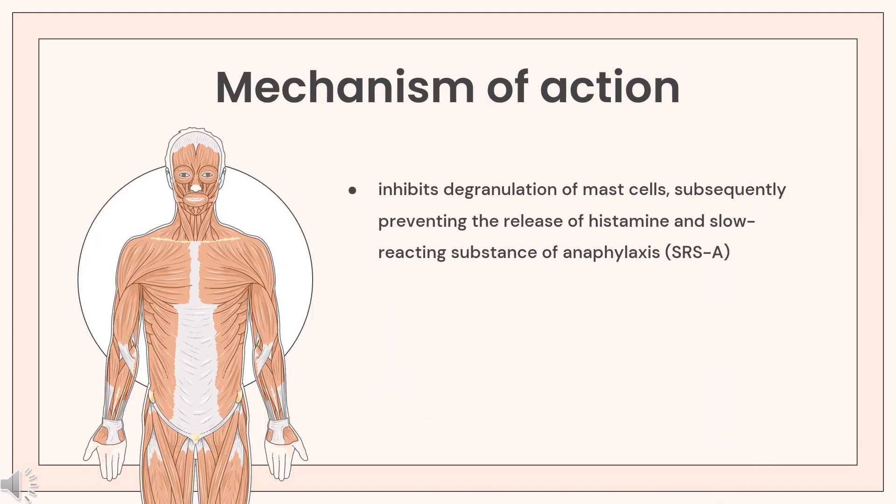Mechanism of Action: Chlorozoxazone inhibits degranulation of mast cells, subsequently preventing the release of histamine and slow-reacting substance of anaphylaxis (SRSA), mediators of type I allergic reactions. Chlorozoxazone also may reduce the release of inflammatory leukotrienes.